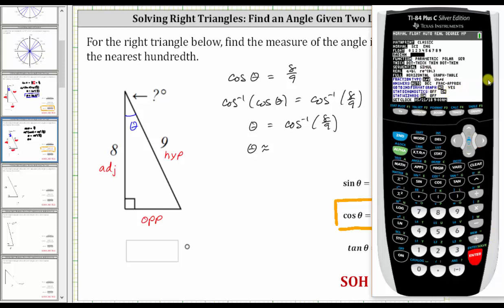And now we go back to the home screen by pressing second mode for quit, and we enter inverse cosine eight ninths. We press second cosine for inverse cosine, and then eight divided by nine, close parenthesis, and enter.